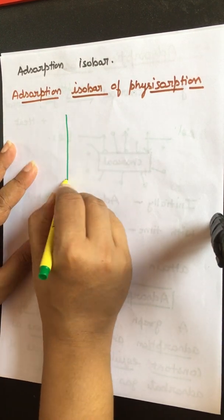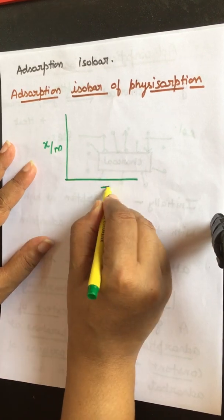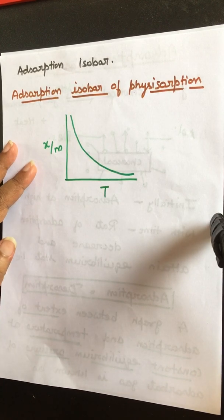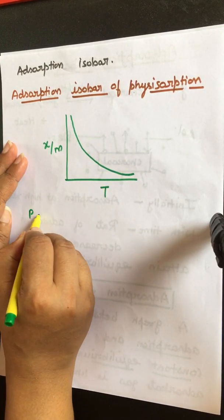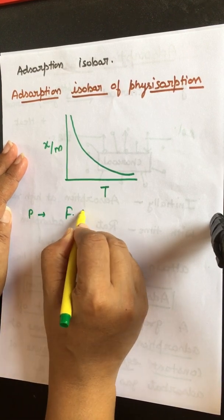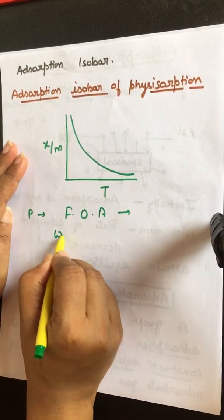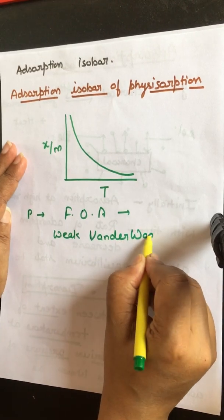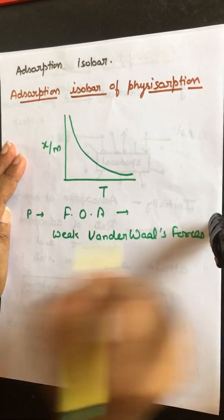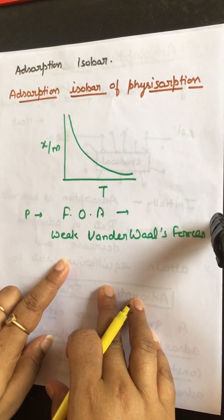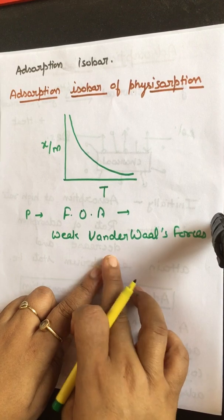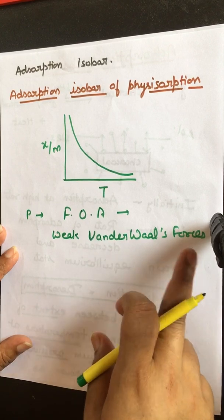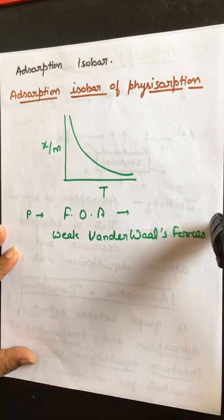For physisorption, the graph of extent of adsorption versus temperature comes out like this: as temperature increases, extent of adsorption decreases. Why? Because in physisorption, the forces of attraction between adsorbate and adsorbent are only weak van der Waals forces.